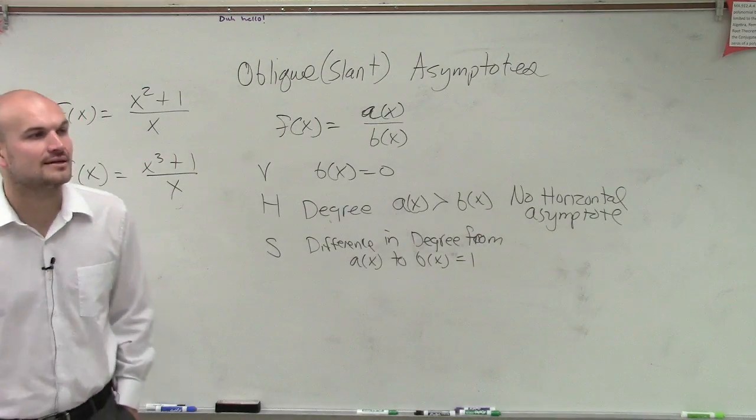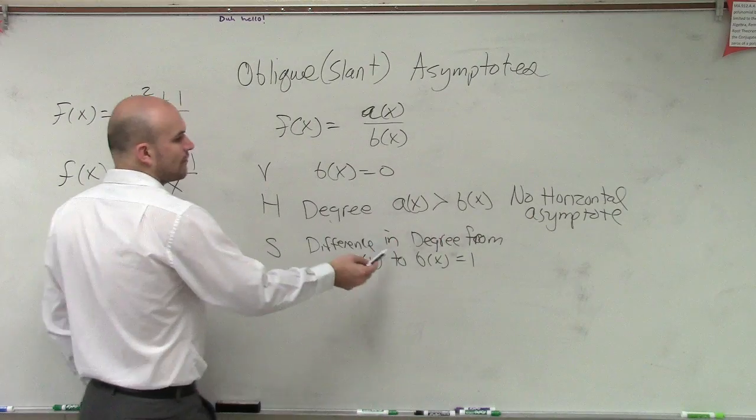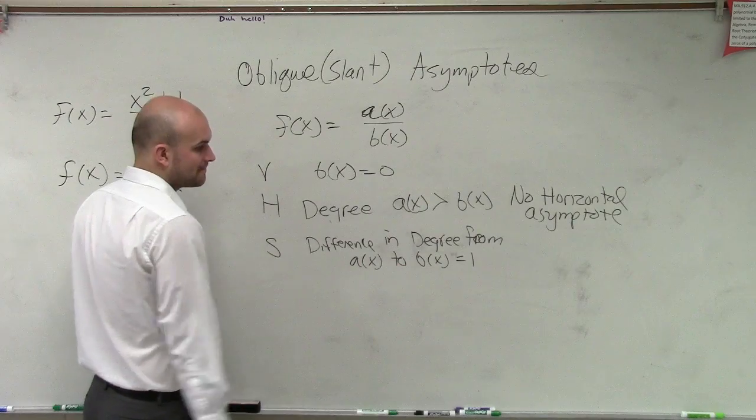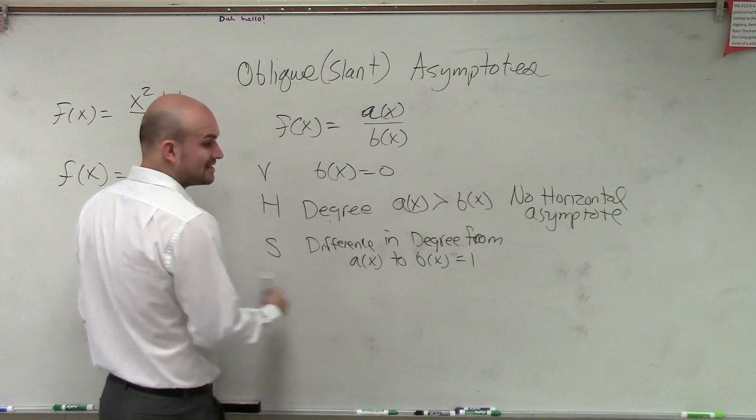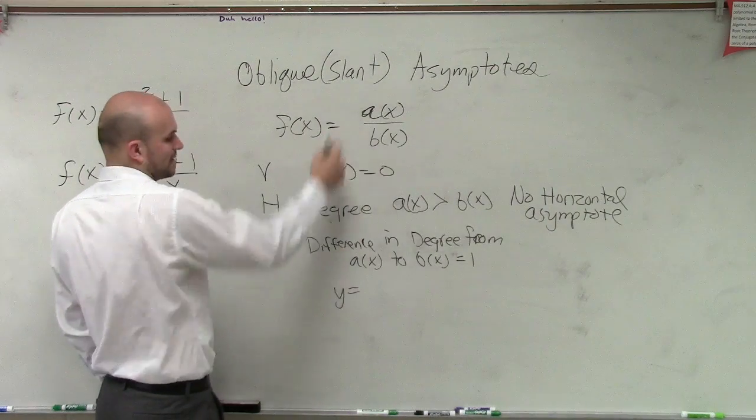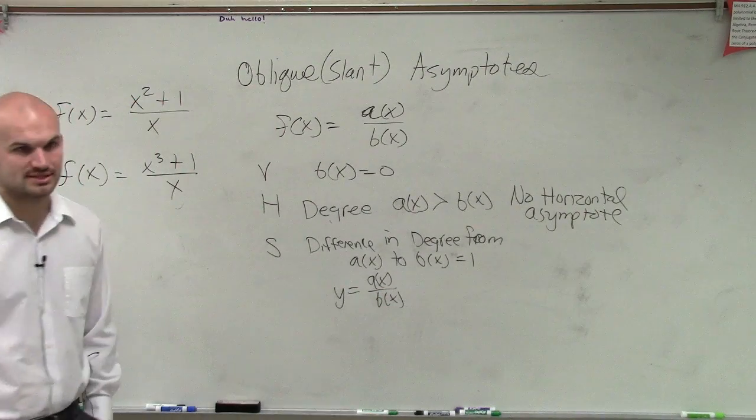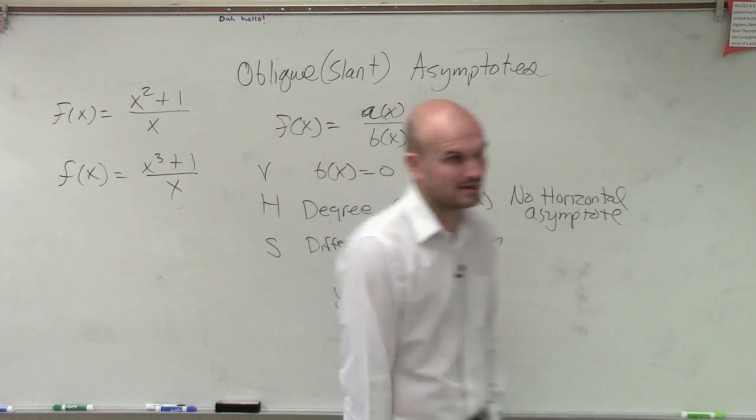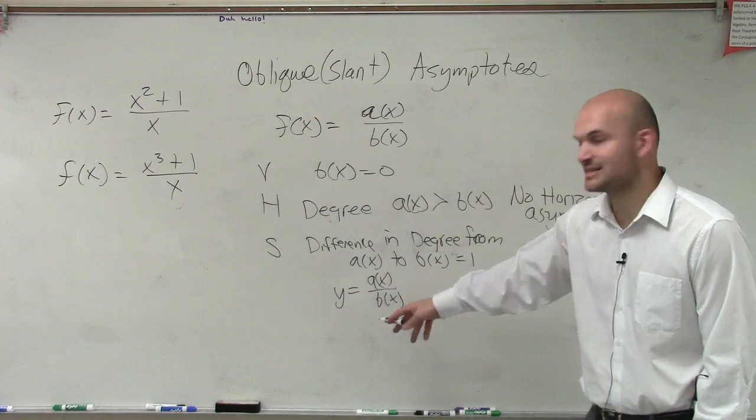So how do we find the slant asymptote? Well, the slant asymptote, so first of all, we have to have the difference from their degrees, from the degree a of x to b of x. Then the slant asymptote is all it's going to be is the quotient. So it's going to equal y equals, so now what we're going to do is y equals a of x divided by b of x. So it's going to be the quotient without the remainder. So we're not going to deal with the remainder.